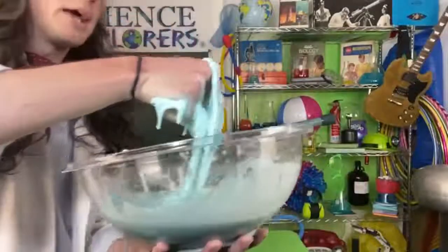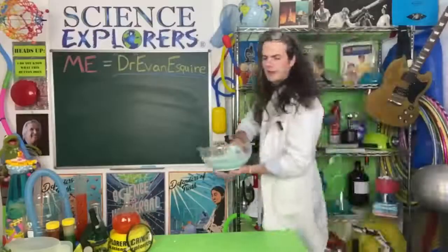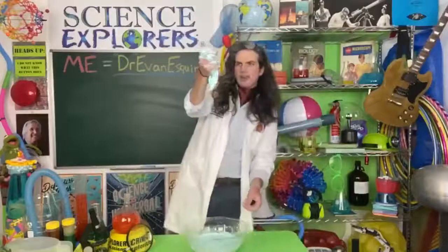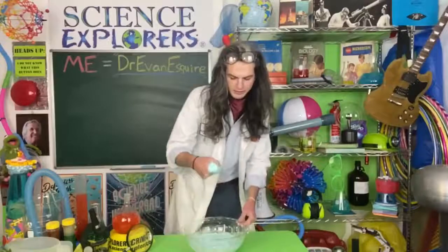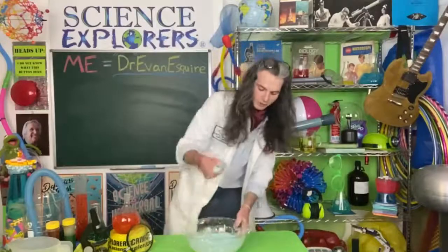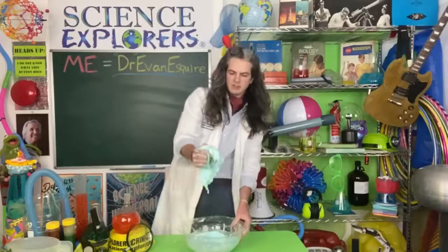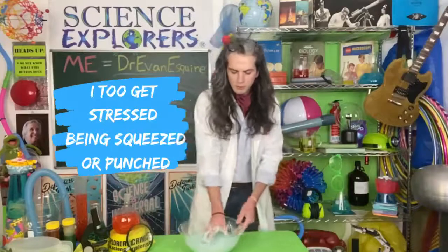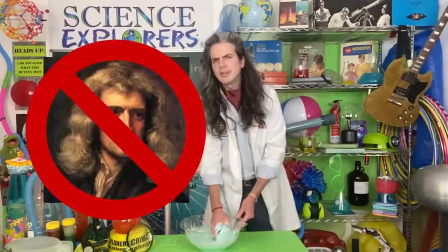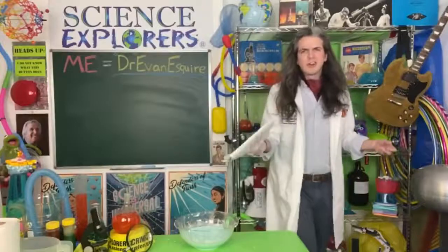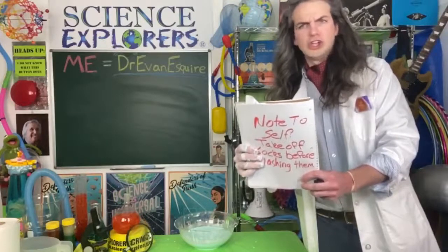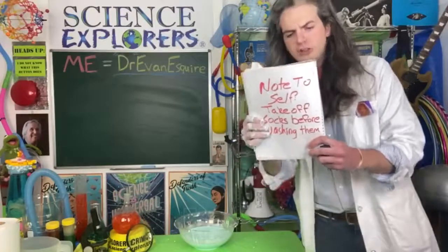Now I am a big, big fan of Oobleck. I bet a lot of you are wondering why it does that — I'll tell you why. When it's under stress it gets hard, kind of like tax season. So when it is under stress — and when I say stress I mean being squeezed or being punched — it acts like a solid, but when you hold it, it acts like a liquid. And that is because it is what we call a non-Newtonian fluid. The definition of a non-Newtonian fluid is a fluid that does not follow Newton's law of viscosity, i.e. a constant viscosity under stress.